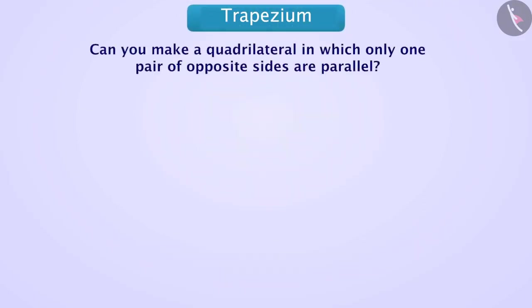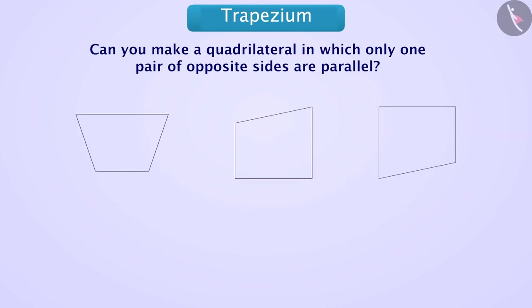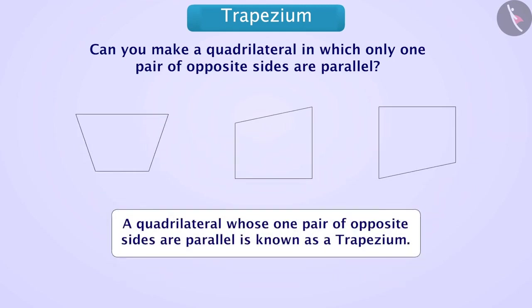Now let's learn what a trapezium is. Can you make a quadrilateral in which only one pair of opposite sides are parallel? You can pause the video and try this yourself. A quadrilateral whose one pair of opposite sides are parallel is known as a trapezium.